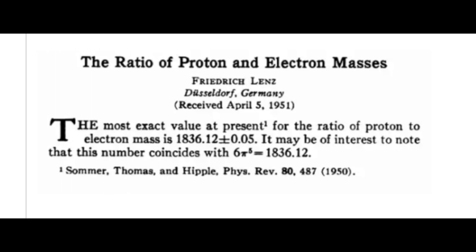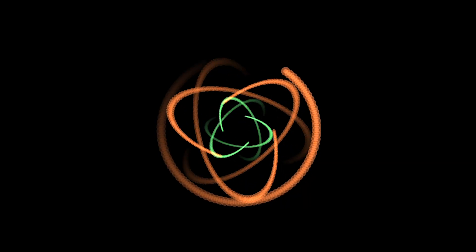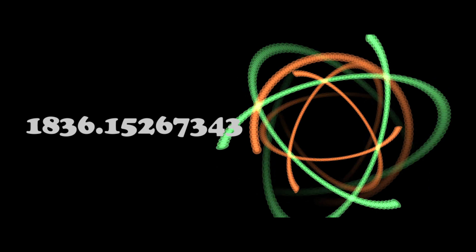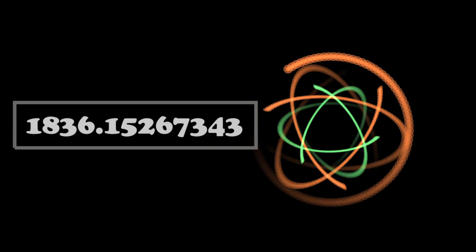The paper talks about the ratio of the mass of a proton to that of an electron that can be expressed by 6π^5. Today, the numerical value of the ratio of the mass of a proton to that of an electron is found to be 1836.15267343.